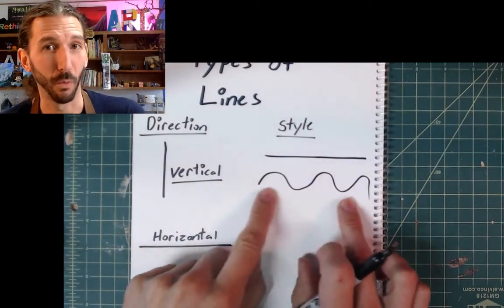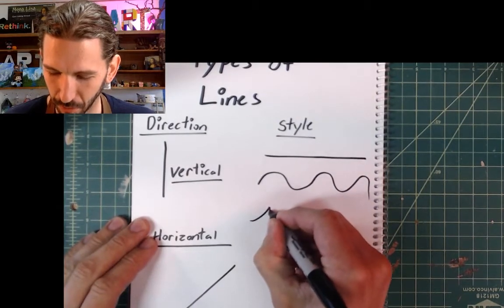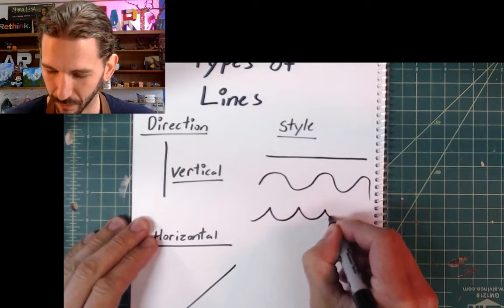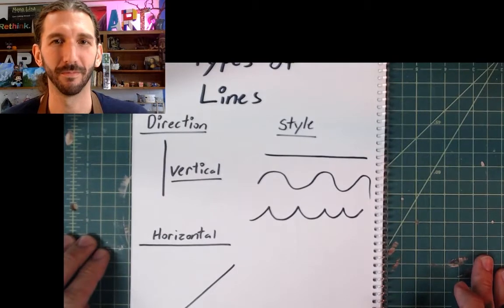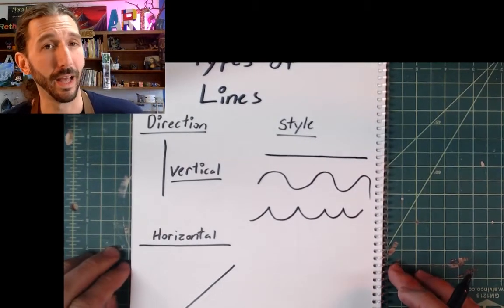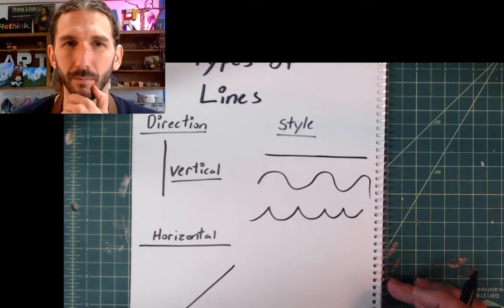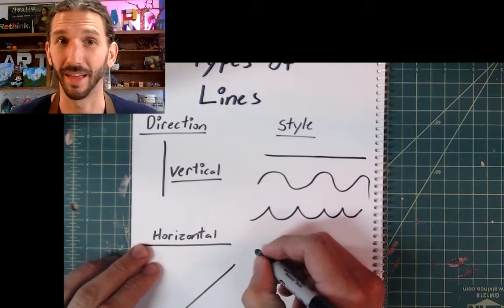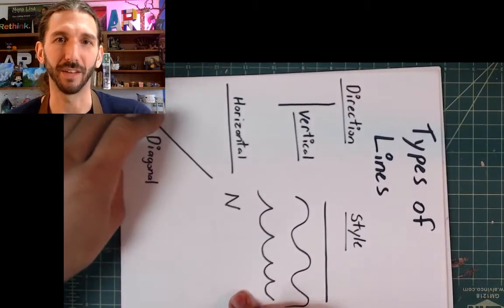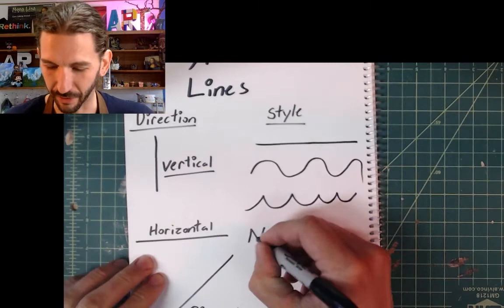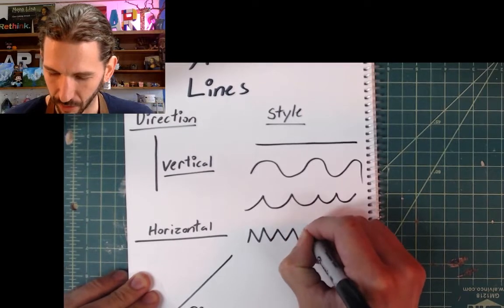A wavy line goes up and down, up and down, up and down. If we're still thinking about water, this might be like a calm ocean, but if the water gets really rough, it might look more like this — where it's pointed on top, almost like a letter W that keeps on going. How about a zigzag? It kind of looks like the letter Z or an N turned sideways, and it just keeps on going. That is what we call a zigzag.